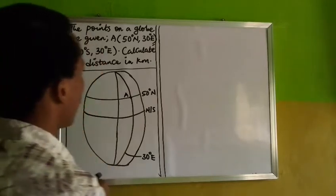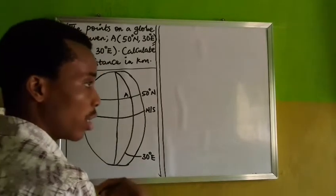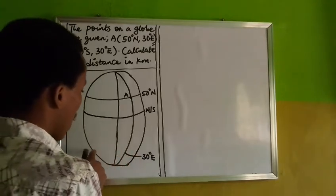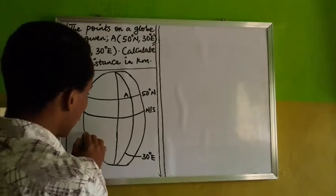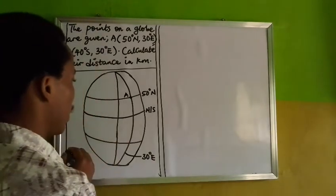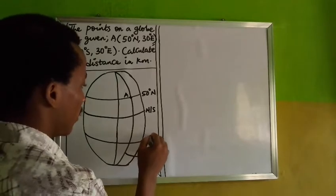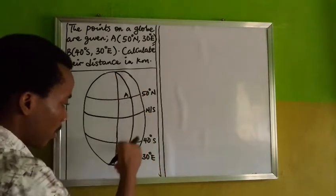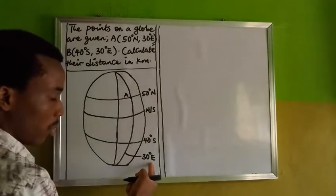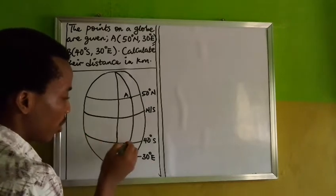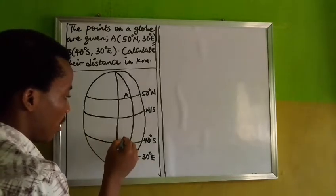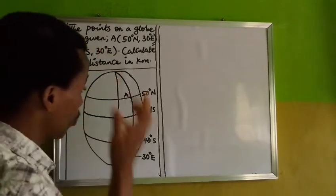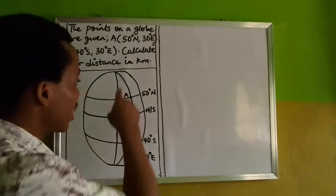The next point is B, which is 40 degrees south — below the equator. 40 degrees south should be somewhere around there. Then 30 degrees east, which is still the same longitude as before. So the point of intersection is here, which is B. Now if you look at this closely, you'll find that those points lie on the same longitude.